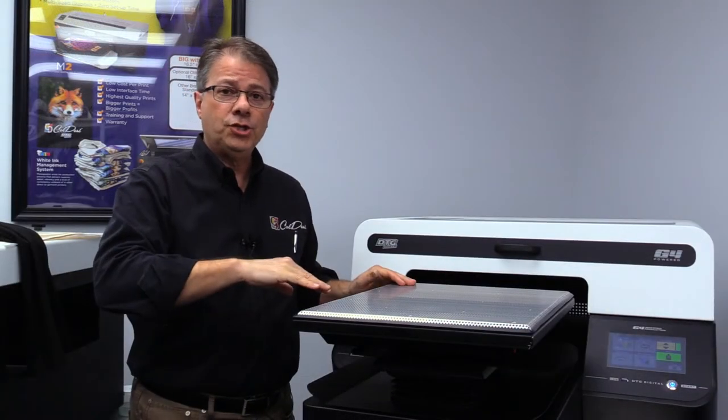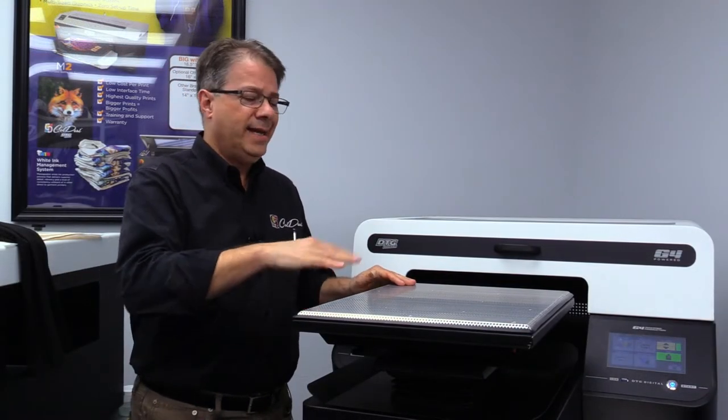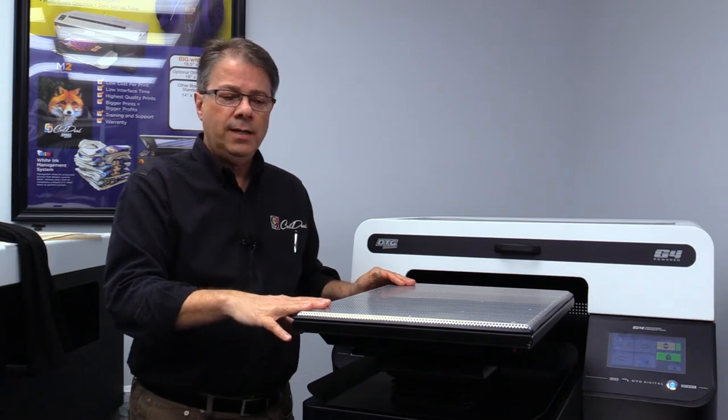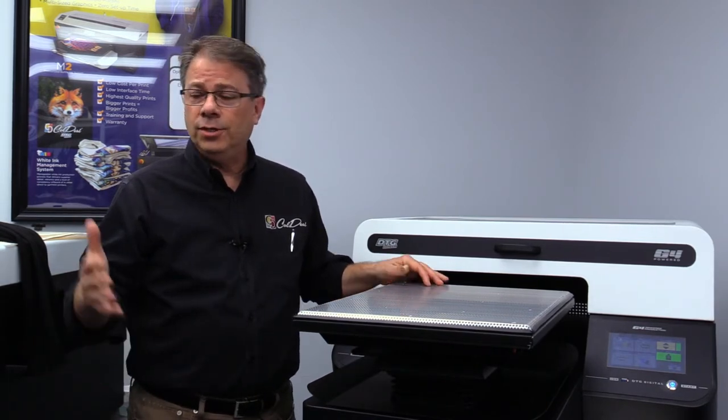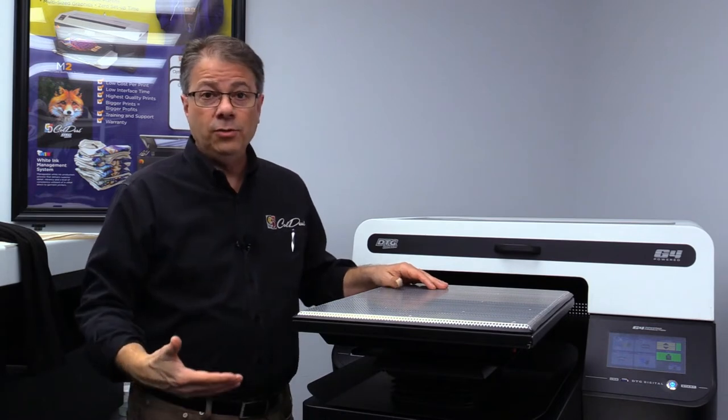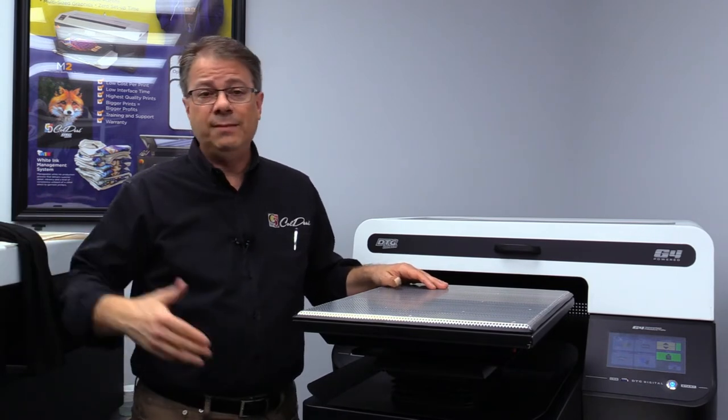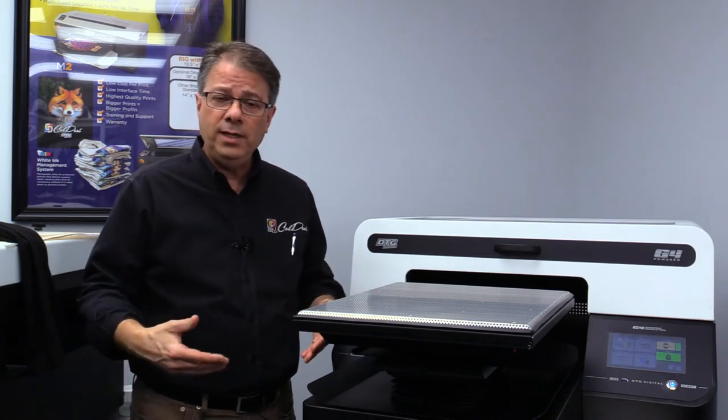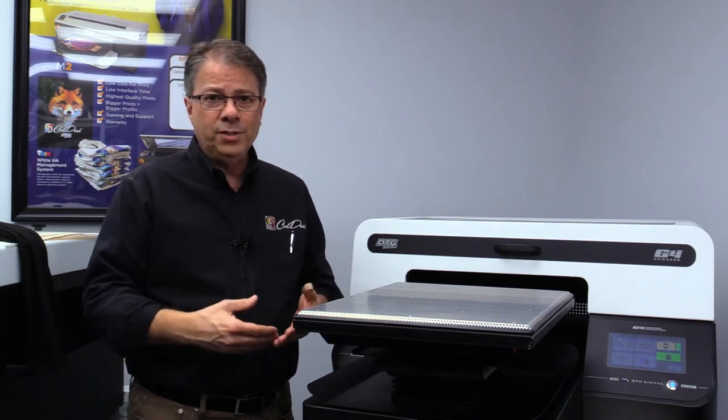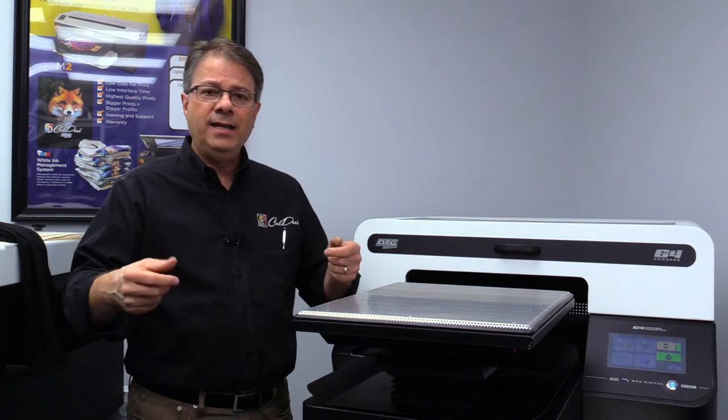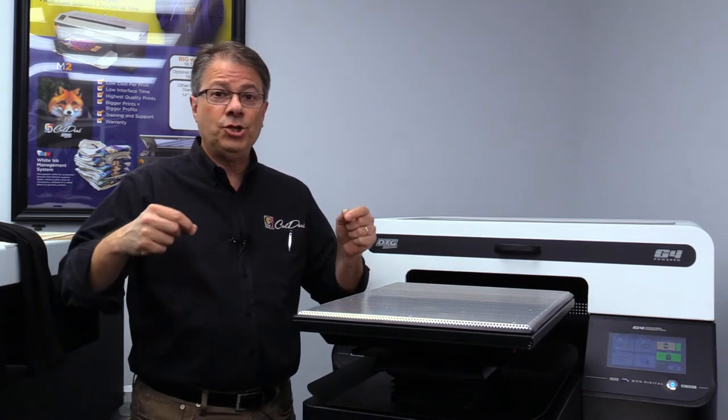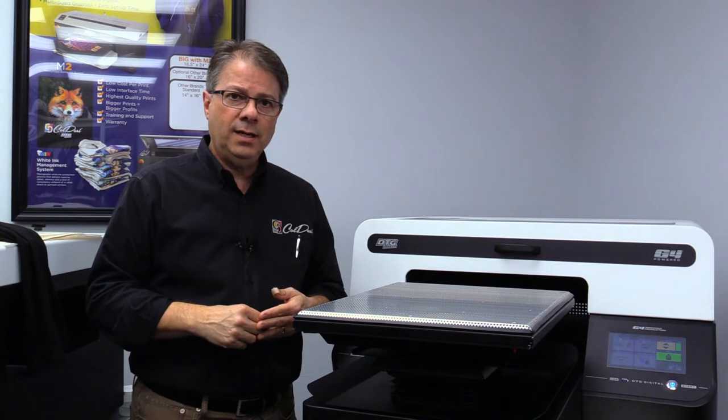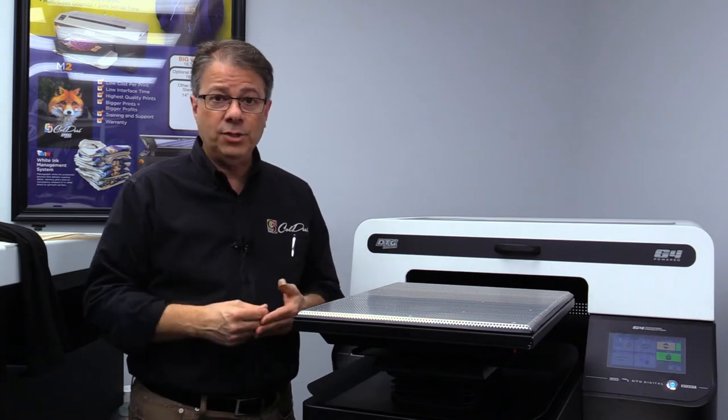Now, you've seen how fast a shirt can load and unload and how the vacuum platen works here. In comparison, a TuckLock platen user, an Experience Pro using an M2, will take about 15 seconds to tuck a shirt properly, to put it into the printer, and then slightly longer than that to take it out because you want to make sure that the shirt doesn't accidentally kick up and touch the wet ink on top of the shirt.